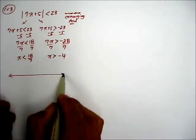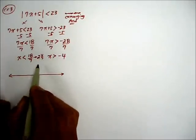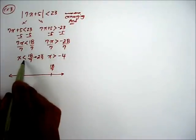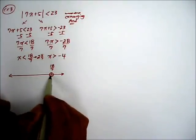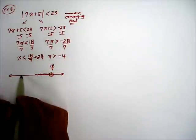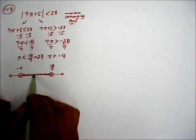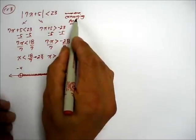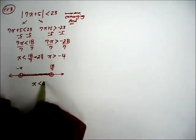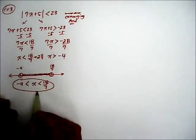If you were to draw that on a number line — 18/7 is like 2 and 4/7 — less than means 18/7 is not part of the solution, so it will be an open circle, and less than means go left. Here is -4, again open circle, but this time x is greater than -4, so shade to the right. It's converging, so it's an 'and.' You write this as a compound inequality: x < 18/7 and x > -4. That is your final solution.